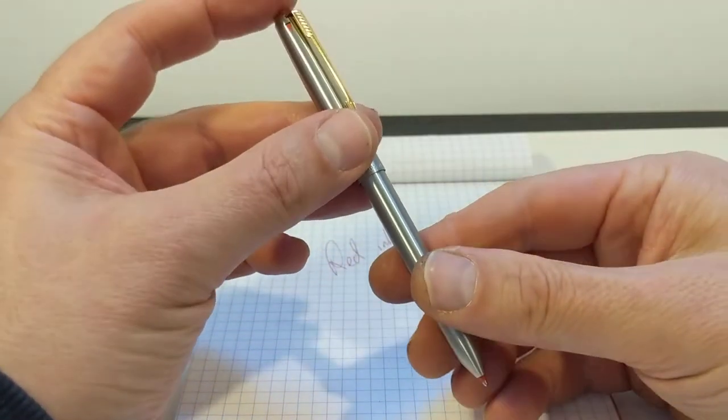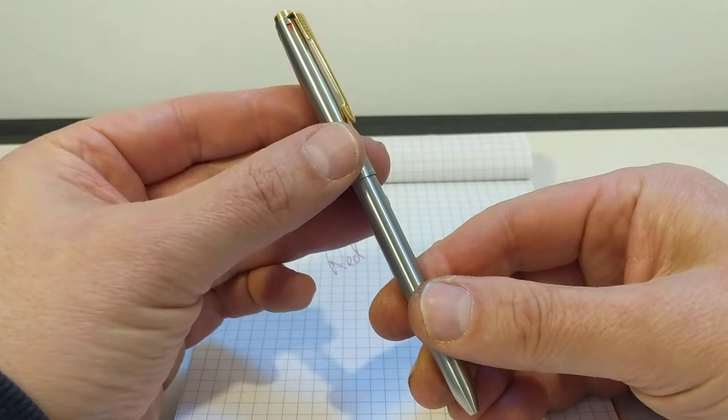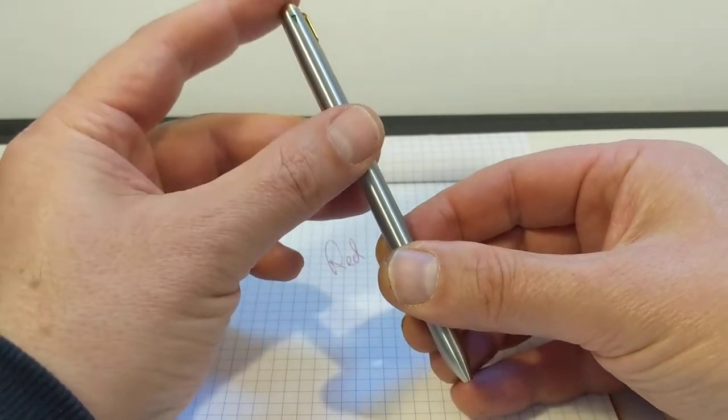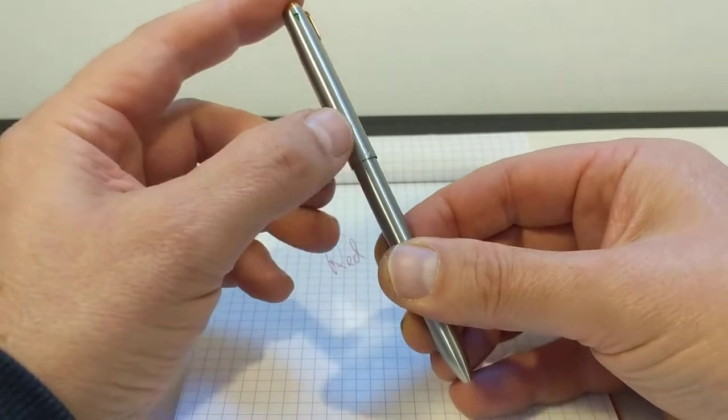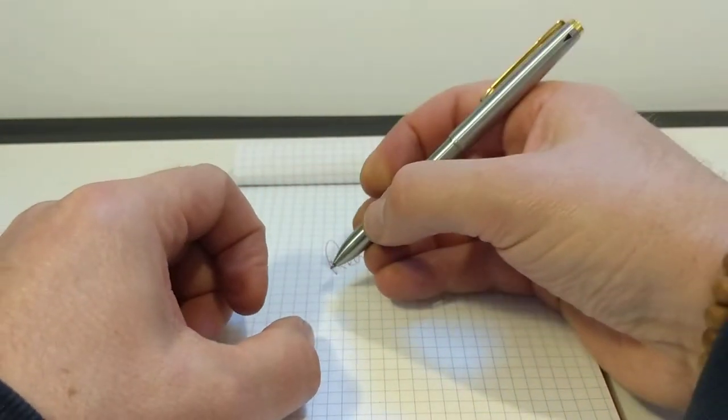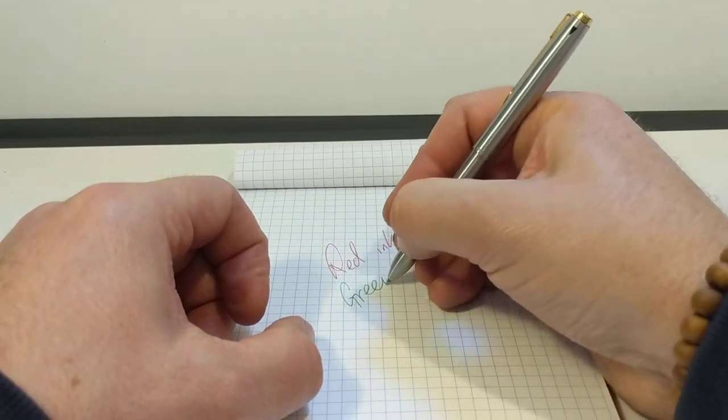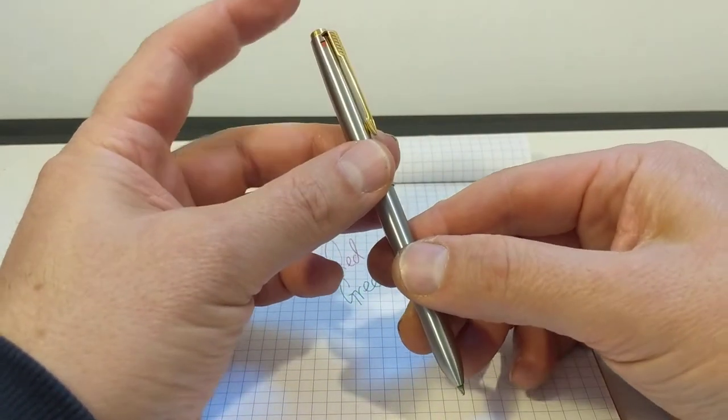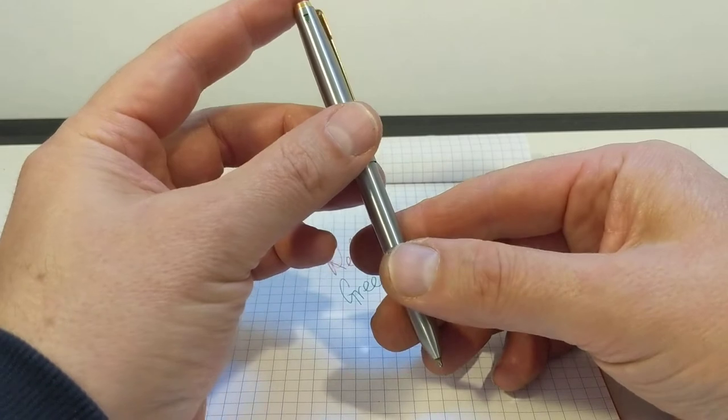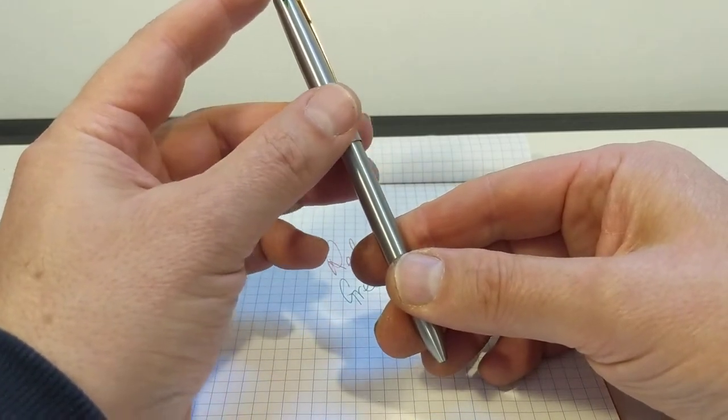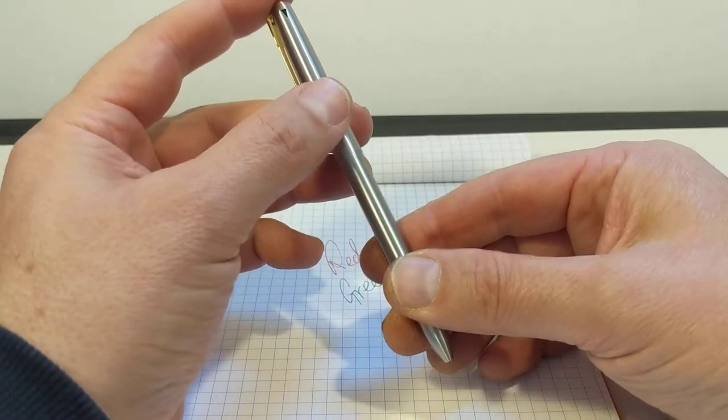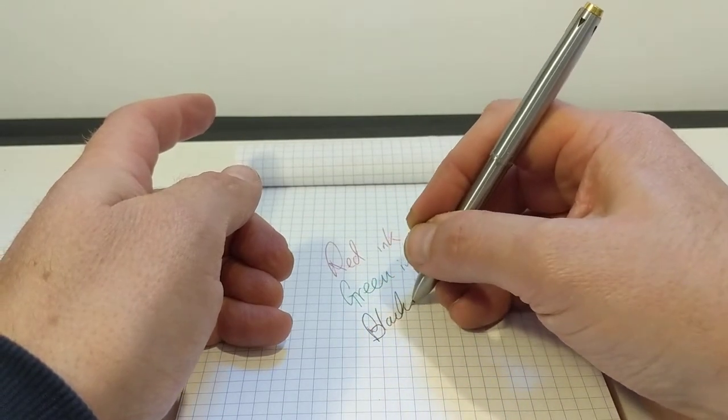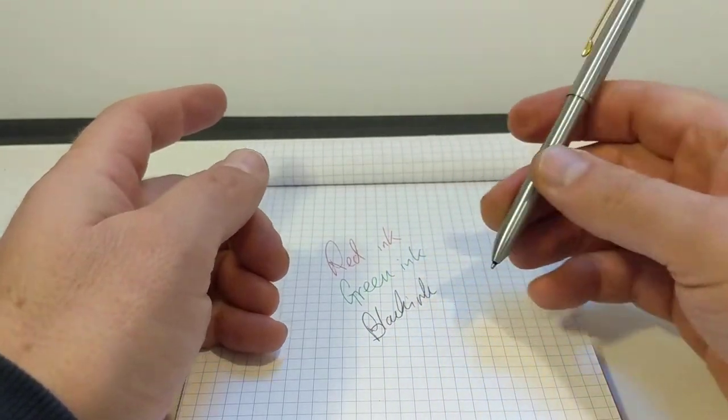Fantastic. Now I want to change color. So I'm going to unclick it, turn it slightly round, and then I've got green up here. Press that there. Now I've got green ink. Green ink. Now I've finished with my green. There's the green. So I press the green down, turn it to black. Now I've got black. Now black ink.